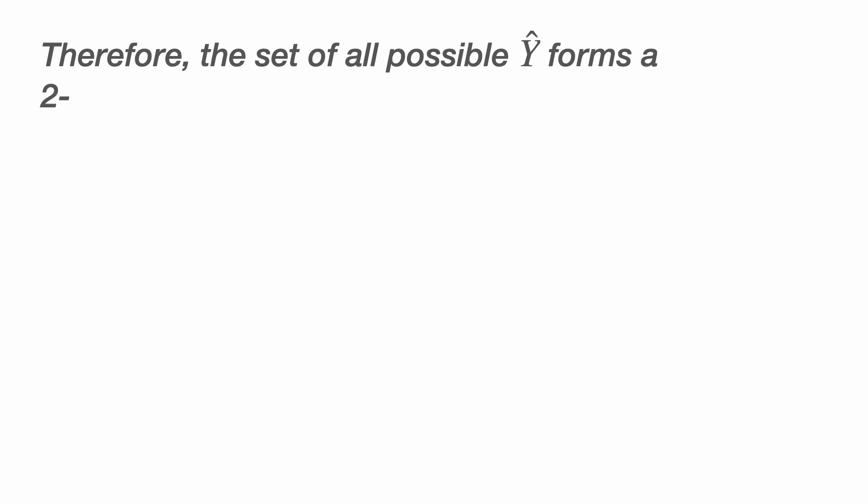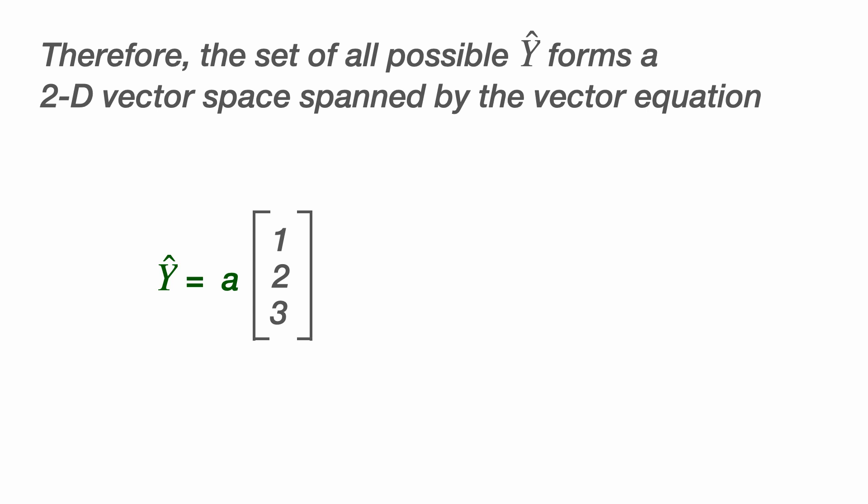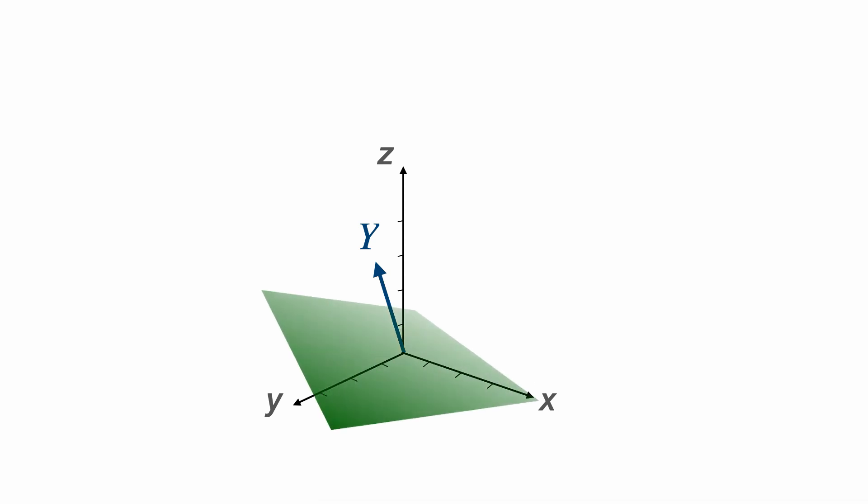And so the complete set of all possible Y hat forms a two-dimensional vector space spanned by the vector equation Y hat equals a constant A times the vector 1, 2, 3, which comes from our original X in our table, plus a constant B. So altogether, we have a two-dimensional plane in three-dimensional space, which represents the set of all possible Y hat. And this is where we reach an important question: How far is our vector Y from the Y hat plane?